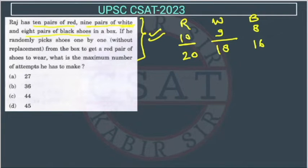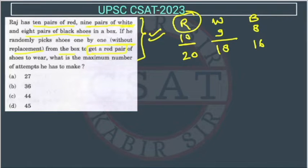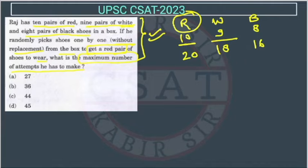And 8 pairs of black — 8 pairs means 16 shoes we are having. If he randomly picks shoes one by one without replacement — he is not putting them back — from the box to get a red pair. So he wants to withdraw a red pair of shoes to wear. What is the maximum number of attempts he has to make?